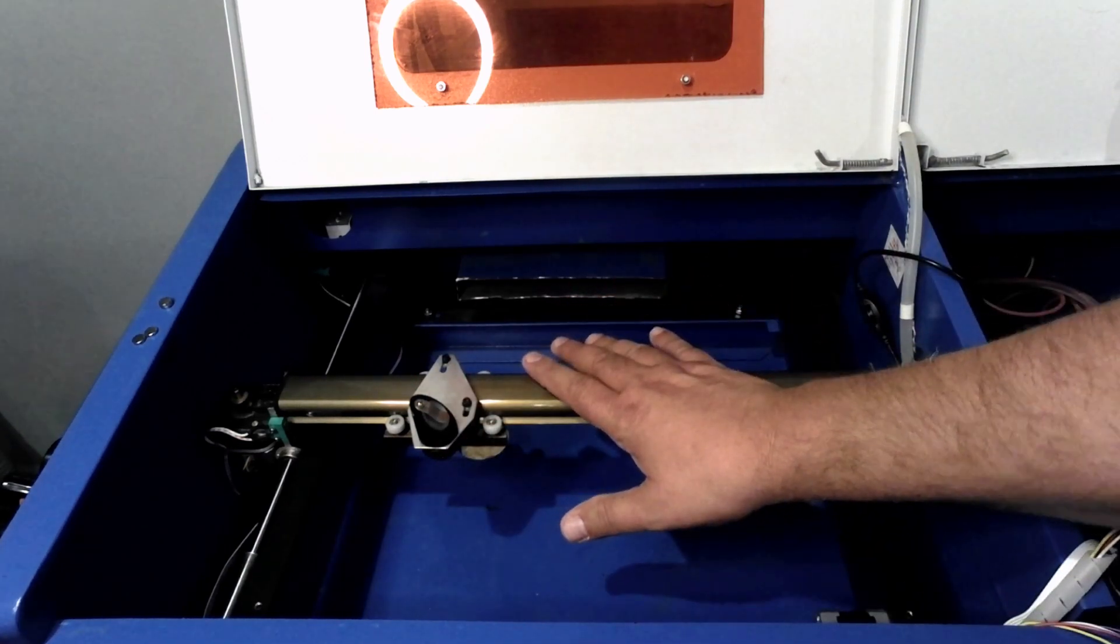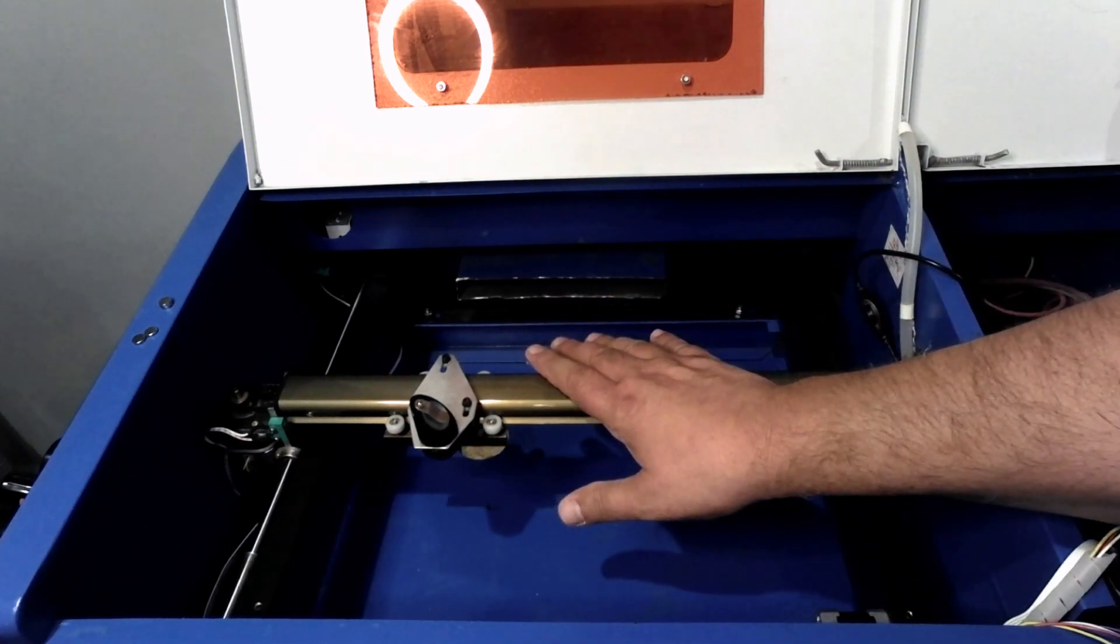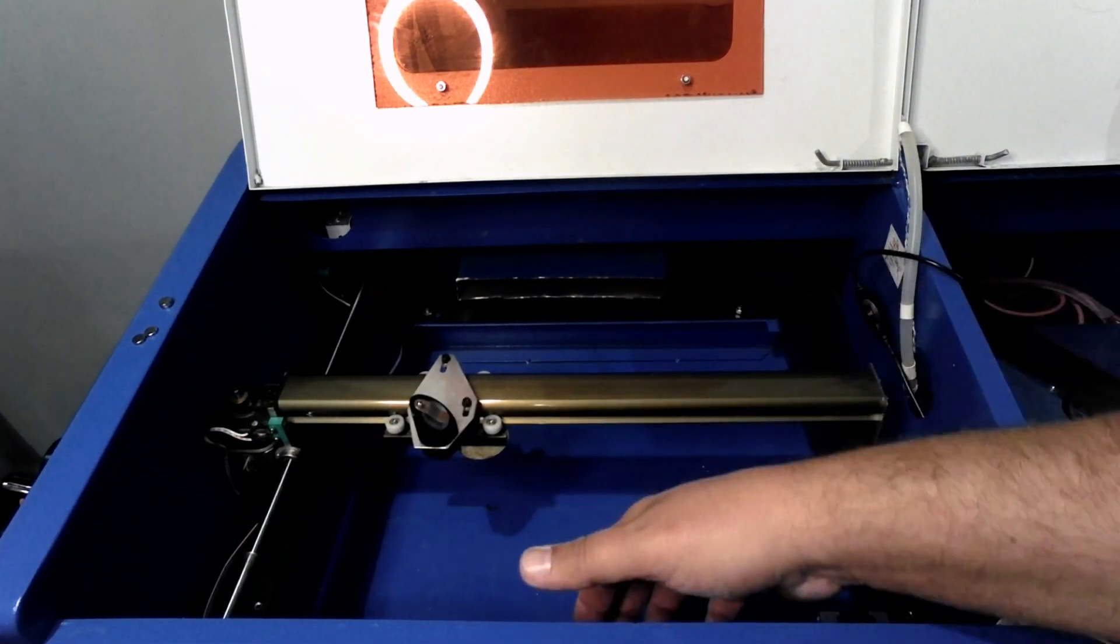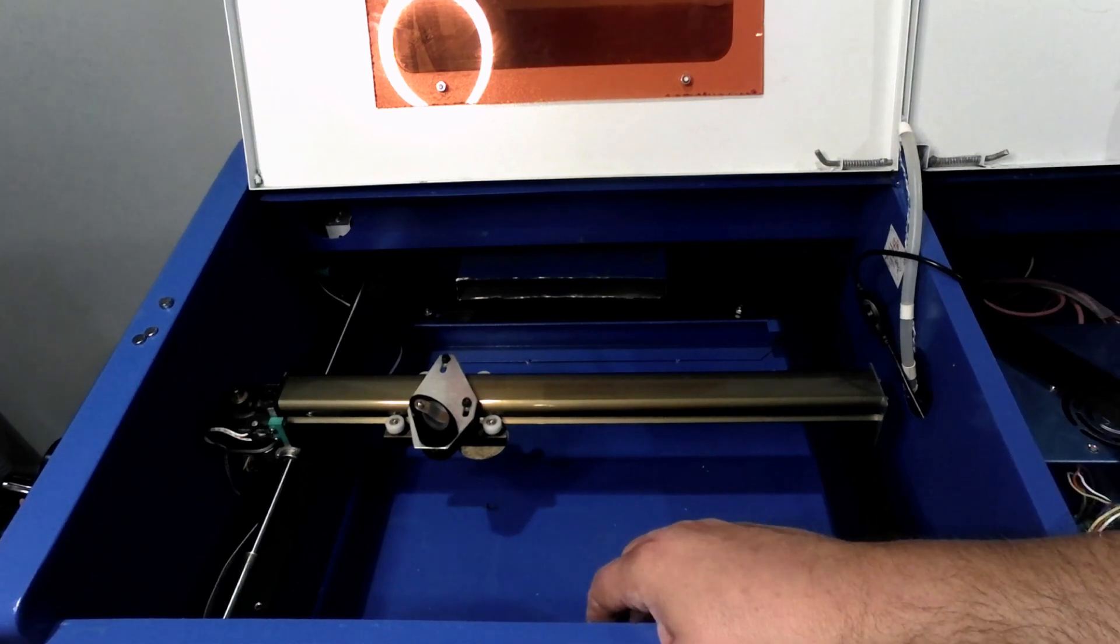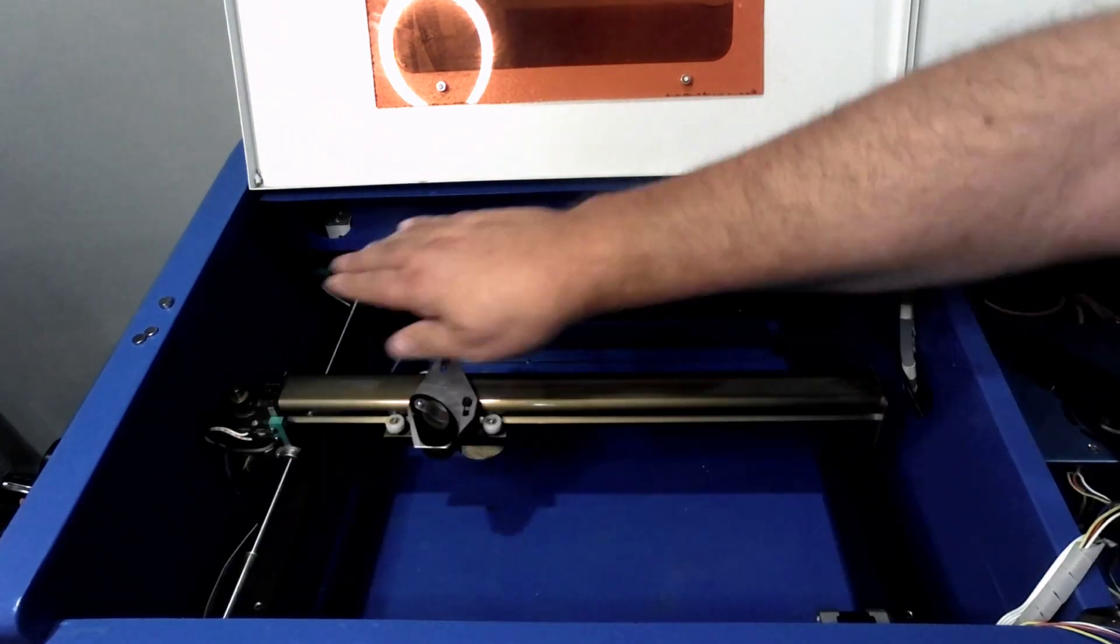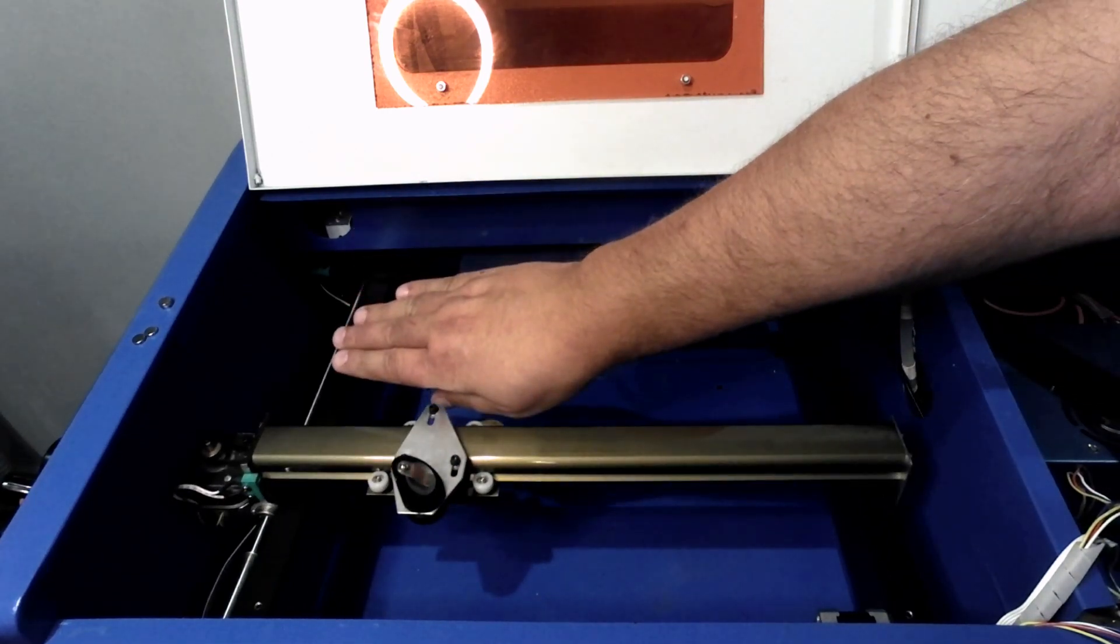One of the things you need to do is ensure that this gantry is level. I've had to shim this up in the front a little bit with some washers, not too much, because the beam exits here. If this whole gantry assembly runs downhill,